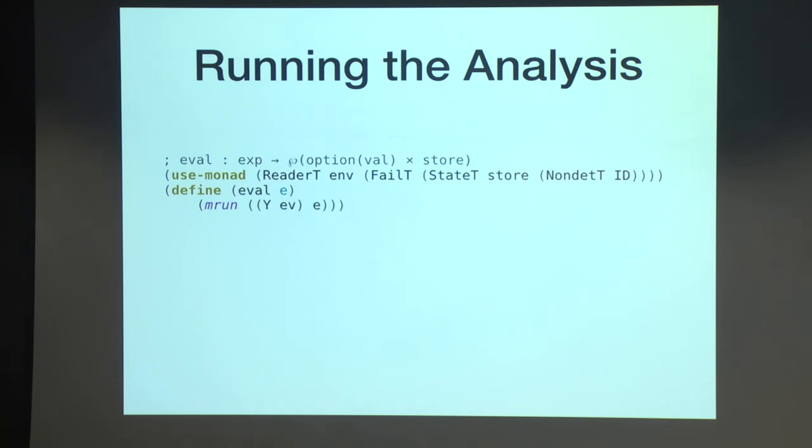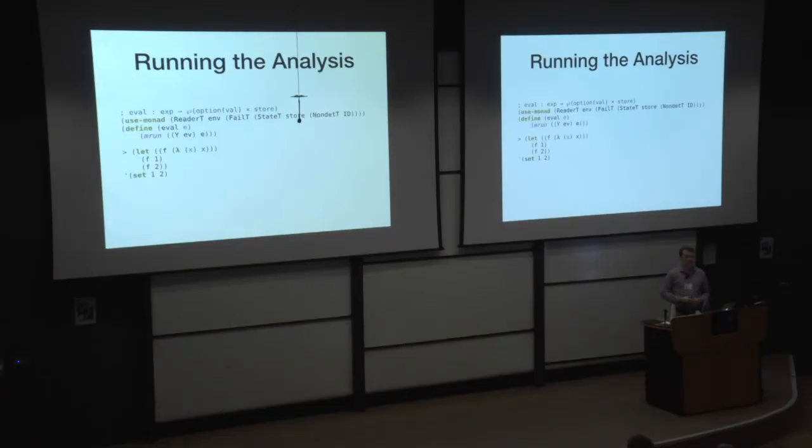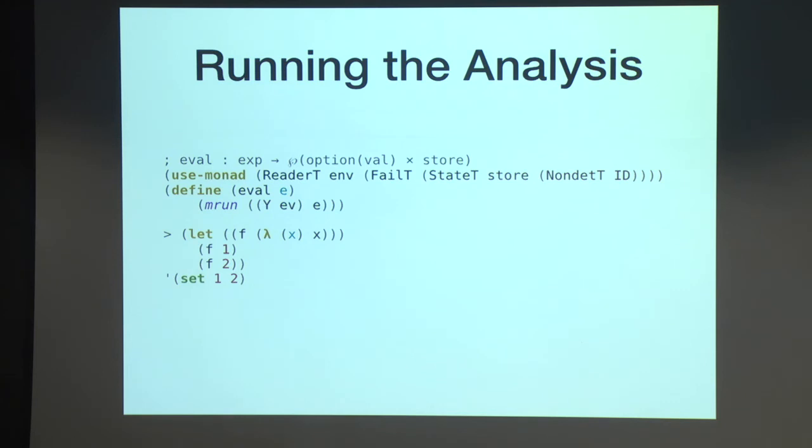So now we have an abstract interpreter that we can instantiate with some stack of monads. There's getting more of them now, which looks scary. And the evaluator just ties the knot with the y-combinator and runs it instantiating monadic state. And what we get is, here is an example of the identity function that we apply to one and then apply to two. And because we're introducing abstraction in the semantics, the final expression, f of two, is going to return both one and two because x could take either of those values during the lifetime of the program. So this is a kind of standard control or data flow analysis.